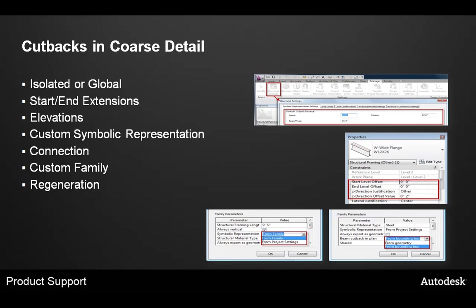Are there differing elevations in the connection? Depending on the elevation difference, the cutbacks might not calculate correctly. You can avoid this by using the z justification parameter in the beam's instance properties. For example, you might want a joist seat to sit on top of a framing member. Rather than adjusting the start and end level offsets, set those to 0 feet 0 inches, then set the z direction justification parameter to 'other' and set the z direction offset value to the height you need.